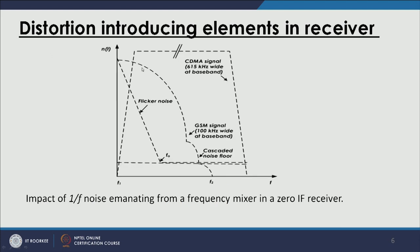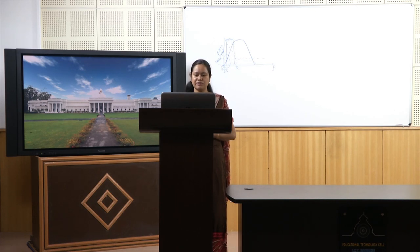Looking at signal profiles: CDMA and WCDMA signals have a tapered profile, so they are affected only in a small portion. GSM signals have lower bandwidth and a flatter profile, making them more impacted by flicker noise. This noise is more prominent in homodyne architectures because the signal is at or very near baseband, whereas in heterodyne architectures the signal is at a higher IF frequency and less affected.